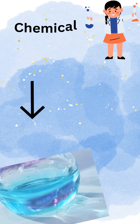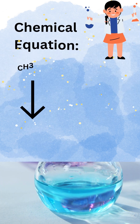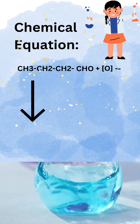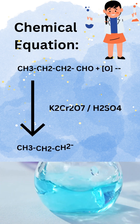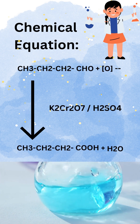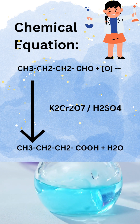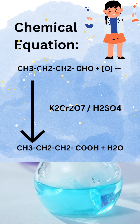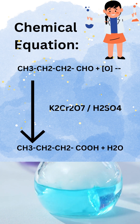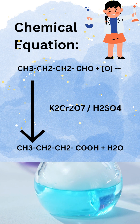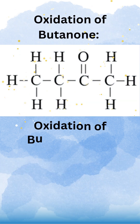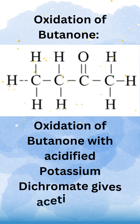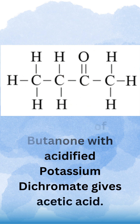CH₃CH₂CH₂CHO plus O₂, in the presence of K₂Cr₂O₇ and H₂SO₄, produces CH₃CH₂CH₂COOH and H₂O. Oxidation of butanone with acidified potassium dichromate gives acetic acid.